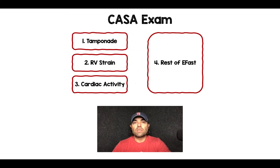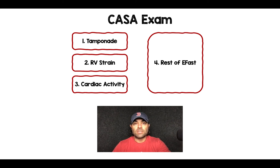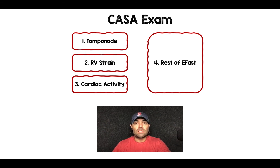After that, you can do the rest of your eFAST, because it doesn't interrupt CPR. You can look for tension pneumothorax, aortic dissection, blood in the abdomen, or free fluid in the abdomen. I really like this because with each pulse check, you check for one thing at a time.